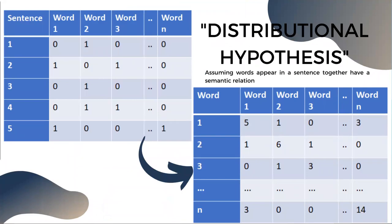Let's talk about training those embeddings. The model I downloaded was trained on Wikipedia — so you download all the files, shove them into one gigantic terabyte-long file, and that's your training data. What we assume is a distributional hypothesis, which is that words that appear in similar contexts have similar meanings.